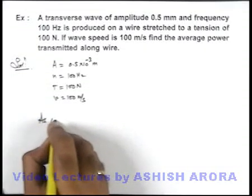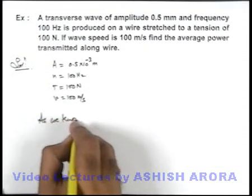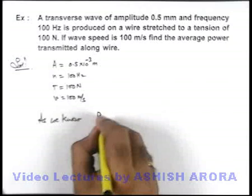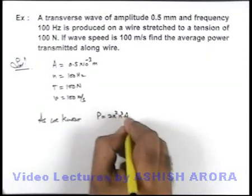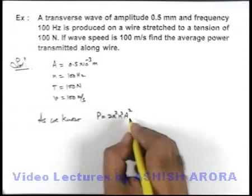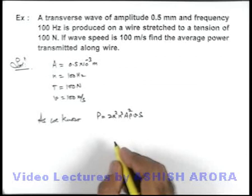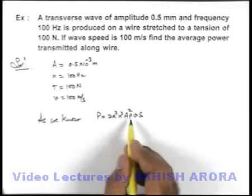Now we can use, as we know, power transmitted along the wire can be given as 2π²n²A²ρvS. This is what we use in this situation.